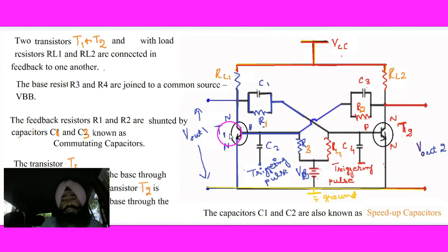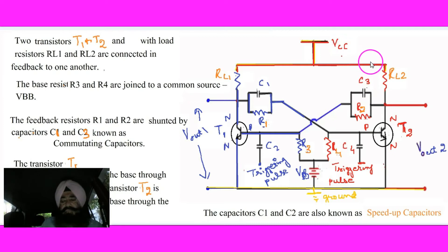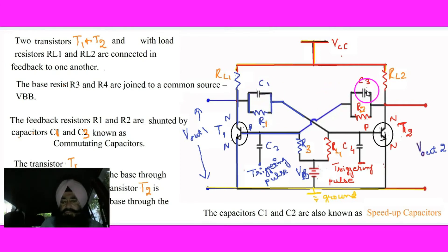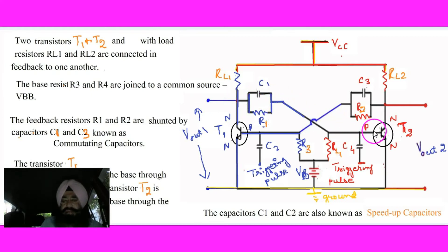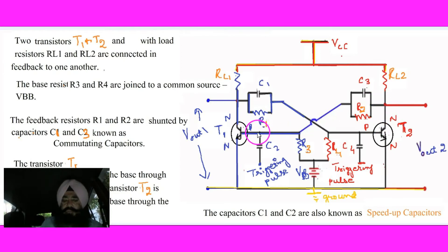This is the circuit of the bistable multivibrator with two transistors T1 and T2, with load resistors RL1 and RL2. VCC supply is given to the collector of T1 through RL1, and to the collector of T2 through RL2. There is a parallel arrangement of C1 and R1, and a parallel arrangement of C3 and R2. The collector of T1 is connected to the base of T2 through C1 and R1.